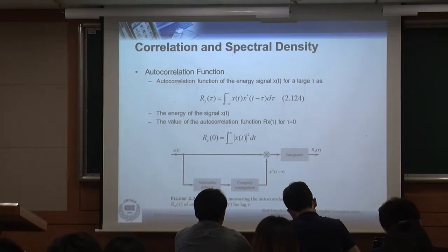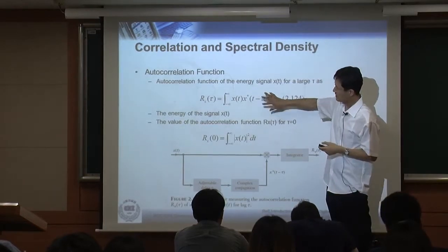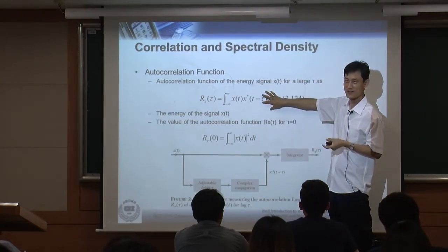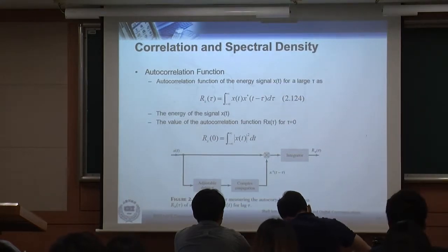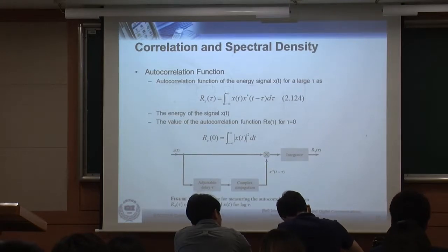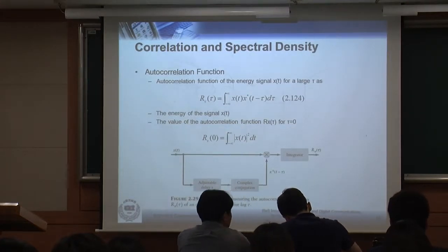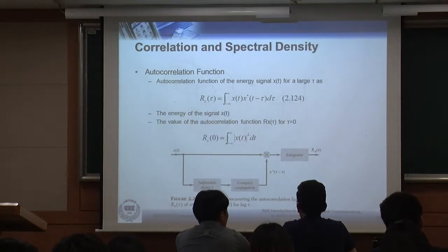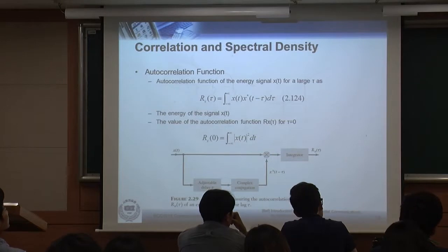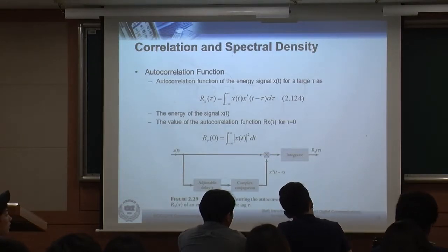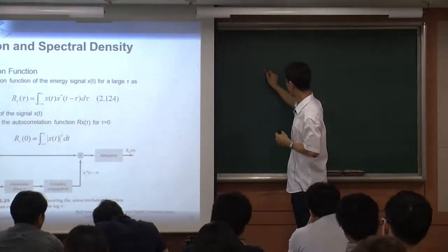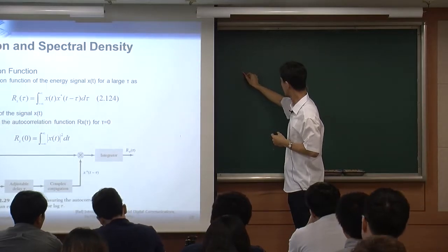Let's look at an example to understand where we use autocorrelation. Consider a radar. A radar antenna transmits some signal — let's say a certain time-domain waveform. The radar is always transmitting this signal. If there's nothing in range, the transmitted signal goes to infinity and nothing comes back.